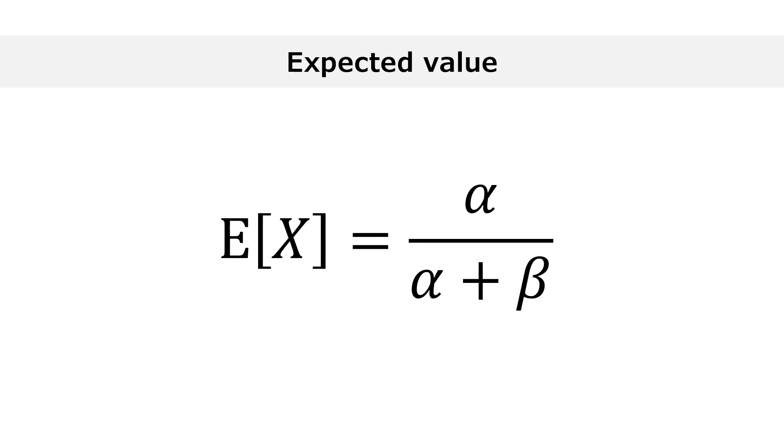The expected value is equal to alpha divided by the sum of alpha and beta. In our example, alpha equals 6, which means that 6 users watched the video until the end. Alpha plus beta equals 10 because there were 10 users in total. So, the expected value is 60%.